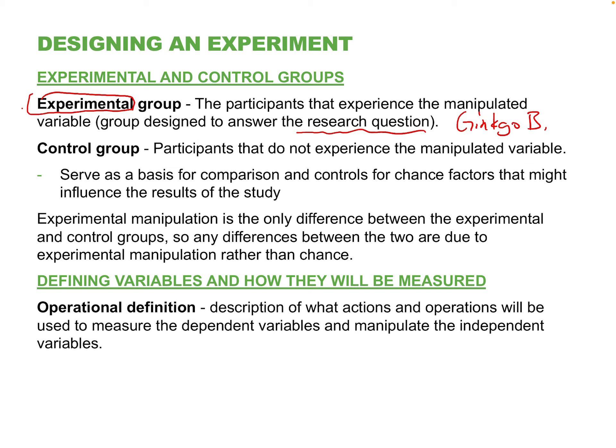A basic component of research is that you have to compare groups. You can't just give one group ginkgo biloba, measure their memory before and after, and claim it works. Let's examine why. Say you had Group A — the experimental group — you gave them ginkgo biloba, gave them a memory test at the start and end of four weeks, and their scores went really high.